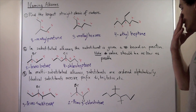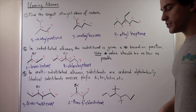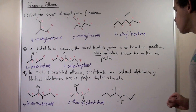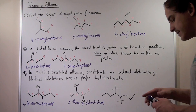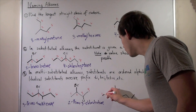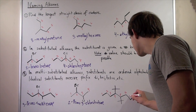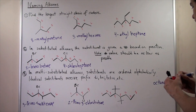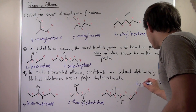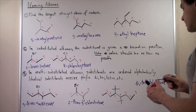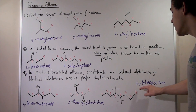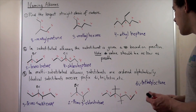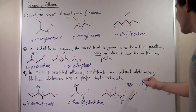In the final molecule, we have two identical substituents — tert-butyl groups — so we'll use the di- prefix. Finding the longest straight chain: one, two, three, four, five, six, seven, eight — so we have an octane backbone. Labeling: one through eight. We have a di-tert-butyl octane. But we still need to label which carbons the substituents are on: positions four and five. So the full name is 4,5-di-tert-butyloctane.